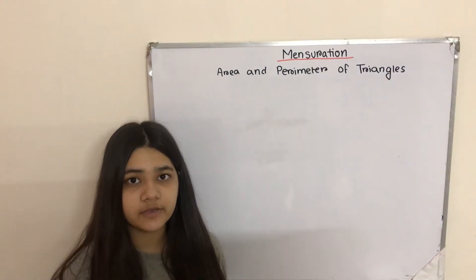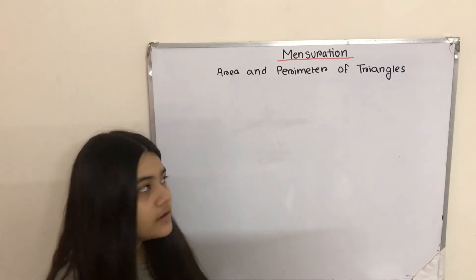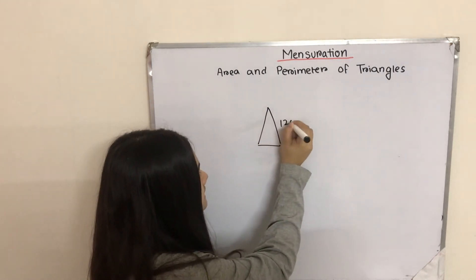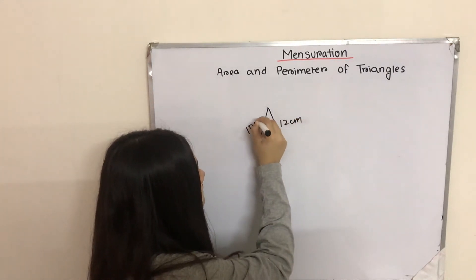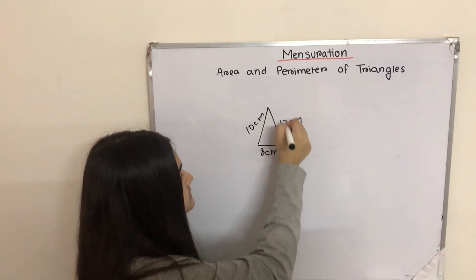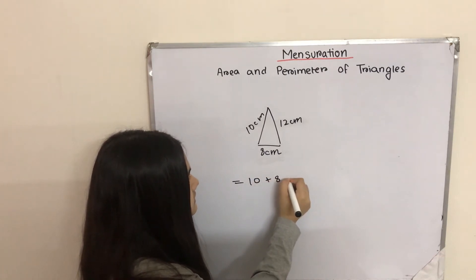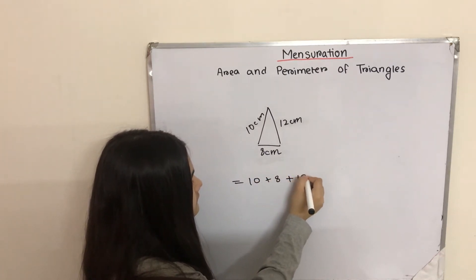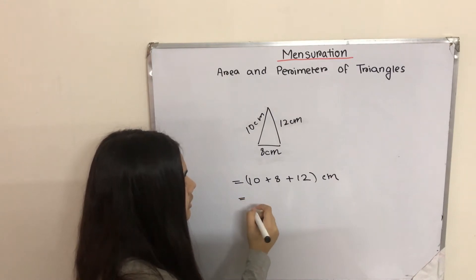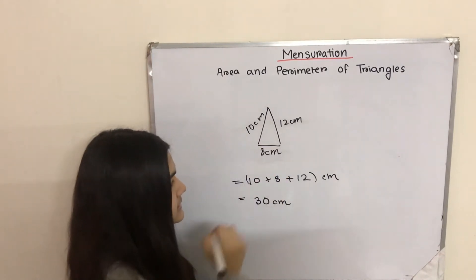To find the perimeter of a triangle, all we need to do is add the three sides together. For example, if the sides are 12 cm, 10 cm and 8 cm, we will add these three sides together — 10 plus 8 plus 12 cm — to get our perimeter, which will be 30 cm in this case.